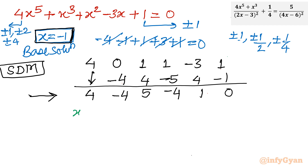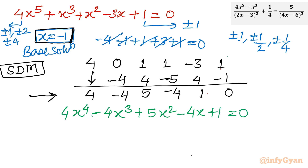So the quartic equation is: 4x power 4 minus 4x cube plus 5x squared minus 4x plus 1 equals 0. Applying the rational root theorem again: eligible factors for constant coefficient 1 are plus or minus 1; for leading coefficient 4, plus or minus 1, plus or minus 2, plus or minus 4. Finding the ratio of constant to leading coefficient gives the eligible rational solutions which may satisfy the quartic equation.